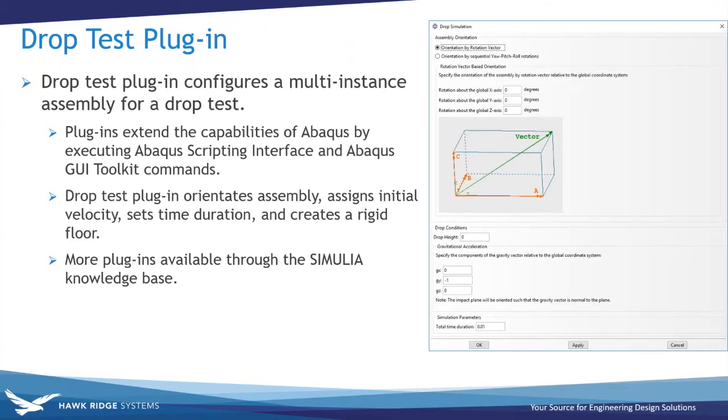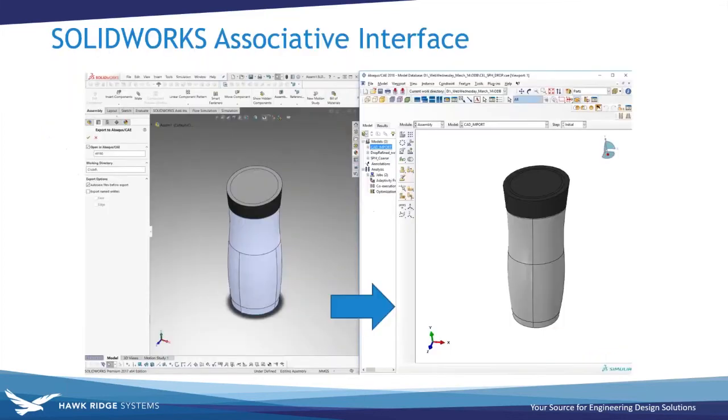The drop test plugin specifically is going to go through a number of steps including orientating your assembly, specifying some initial conditions based on the drop height and the gravitational constant that you enter, and it also creates a rigid floor for the object to impact. To start out, we use SolidWorks to model this bottle just because we like to utilize SolidWorks for those modeling capabilities. Then we use the SolidWorks associative interface to import that model into Abaqus. That associative interface offers us a one-click tool for importing that geometry that's going to keep the link between Abaqus and SolidWorks so that we can push design changes that we make in SolidWorks into Abaqus without having to redefine our whole analysis.